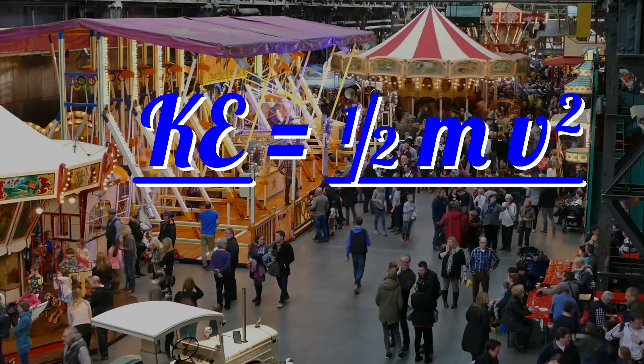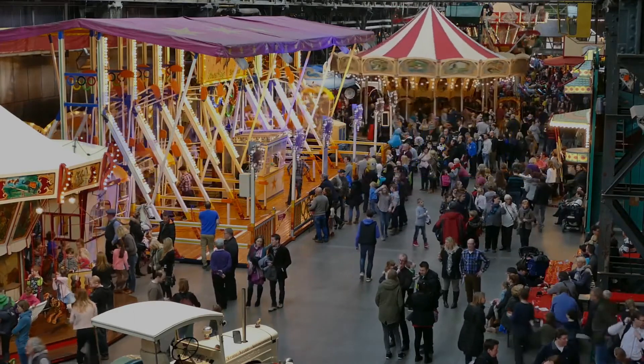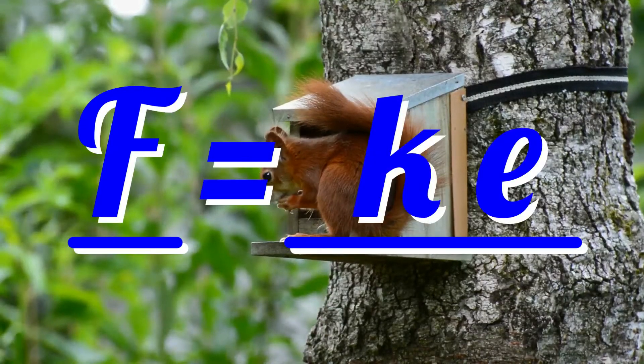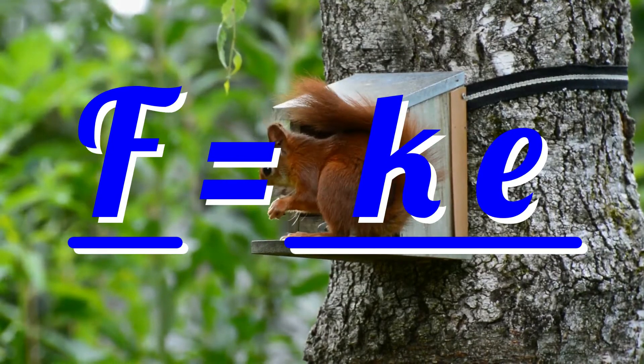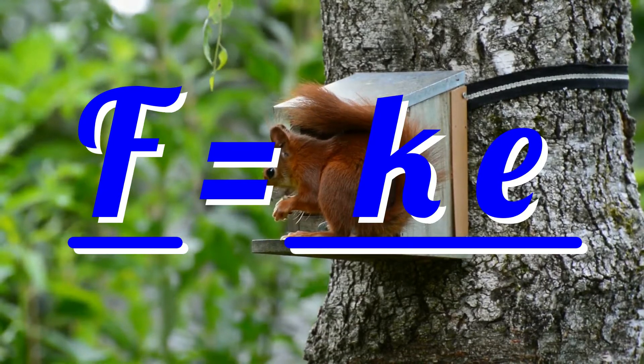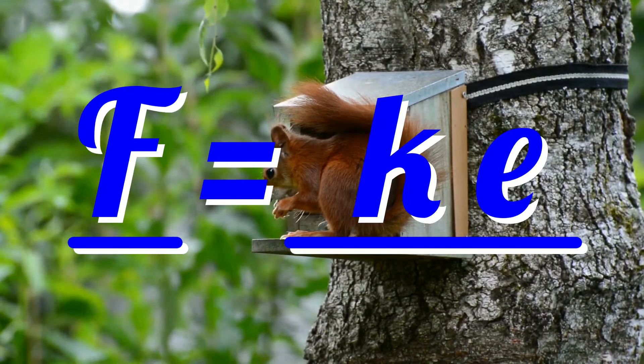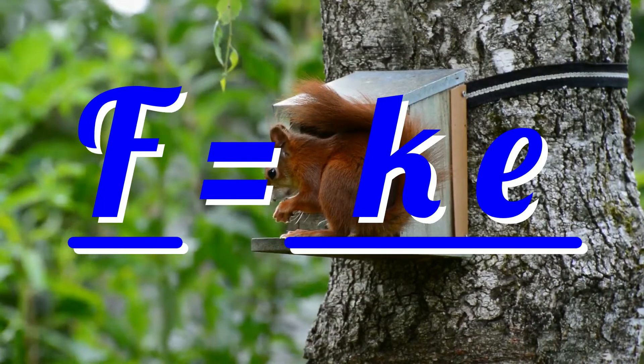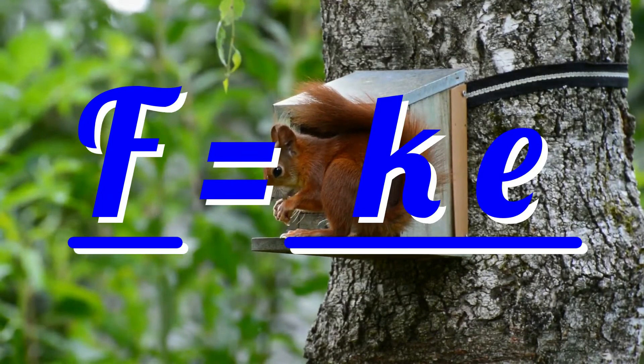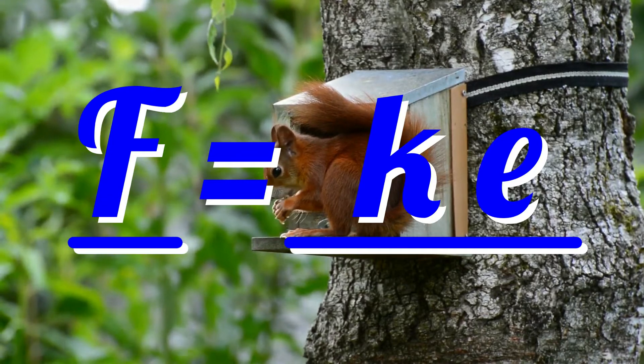F equals ke. The force needed to extend a spring in newtons is equal to the spring constant in newtons per metre, multiplied by the extension in metres. Spring extensions will almost always be stated in centimetres or millimetres, so watch out for a unit conversion here.